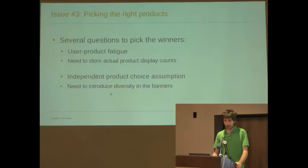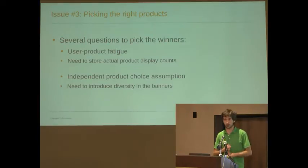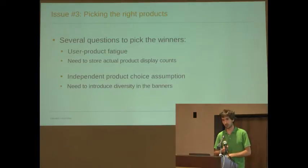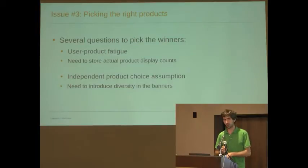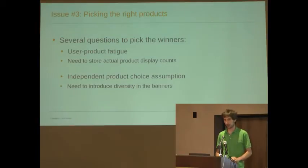The third issue is how do you pick the right products once you've actually scored or ranked the candidate items? The first question was user-product fatigue. If you keep showing the same product to the same user again and again, you actually see that performance decreases. In an ideal world, we would be able to store all the times we've displayed an item to someone and use it as an input in the model. But that's actually a lot of data to store and we haven't solved that problem just yet.